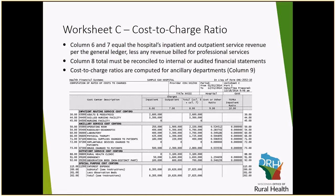Columns 6 and 7 are where the hospital will enter all inpatient and outpatient service revenue and must exclude any revenue billed for professional services. As covered in the Worksheet A webinar series, we removed all professional expenses on A8-2. Here on Worksheet C, we must also exclude the revenue associated with those professional services. That will be listed as a reconciling item when you reconcile the total in Column 8 reported in the Cost Report back to your internal or audited financial statements.